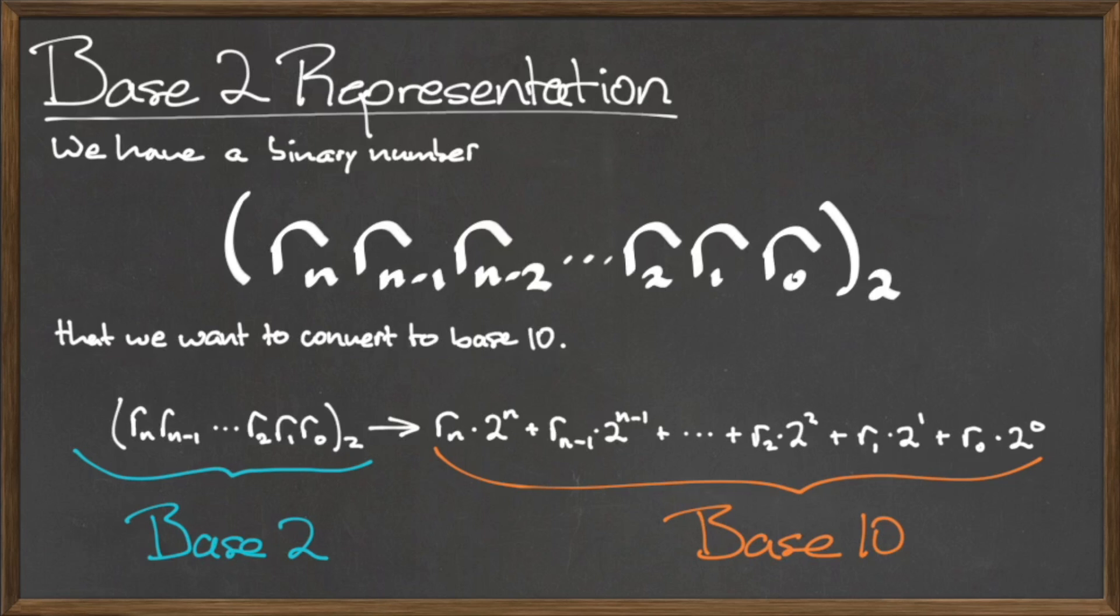For example, the rightmost digit, r sub 0, will be multiplied by 2 to the 0th power. The digit to the left of that, r sub 1, will be multiplied by 2 to the first power, and so on.